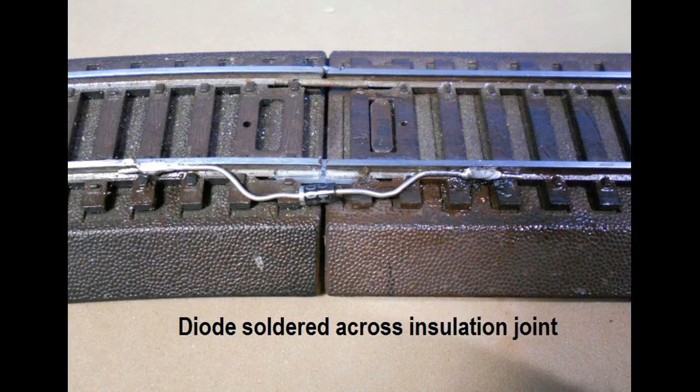Now solder the two diodes across the insulated track on the outer side of the track. It is very important that both diodes face in the same direction. The grey band around the diode indicates the cathode negative side. Use this as a guide to set the diodes in the correct direction. The diodes only allow current to flow in one direction.